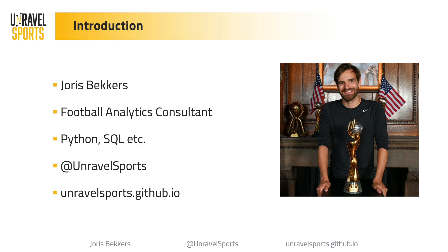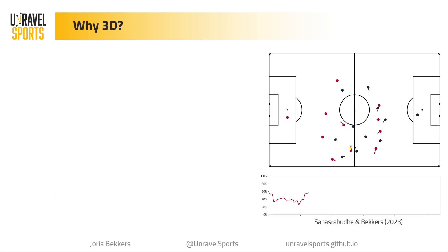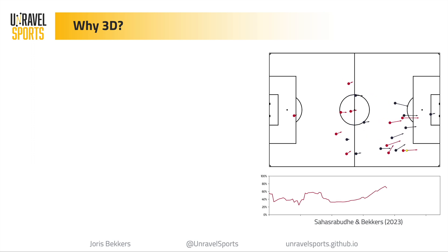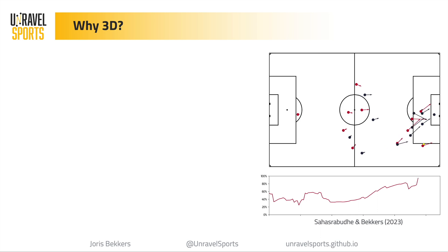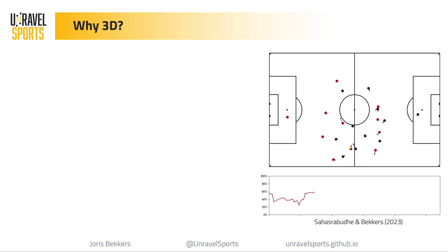This is what tracking data that was just talked about is generally visualized as. You have a top-down view, you see the velocity vectors to indicate how fast the players are going. The thing at the bottom you can ignore for now.